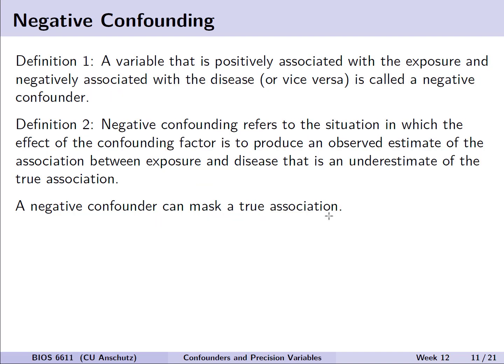This stands in contrast to negative confounding. Definition one is essentially the same idea, but the associations go in different directions. Negative confounding refers to the situation where the confounding factor produces an observed estimate of the association that is an underestimate of the true association. In other words, negative confounding can mask the true association, so by not including that information we may not correctly identify the effect on our model.